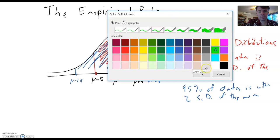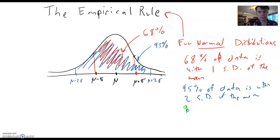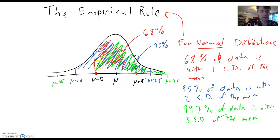And finally, the third part of the empirical rule says 99.7% of the data is within three standard deviations of the mean. So where would that be? Again, that would be down here, mu minus three sigma, mu plus three sigma. This is 99.7 in this big region out here.